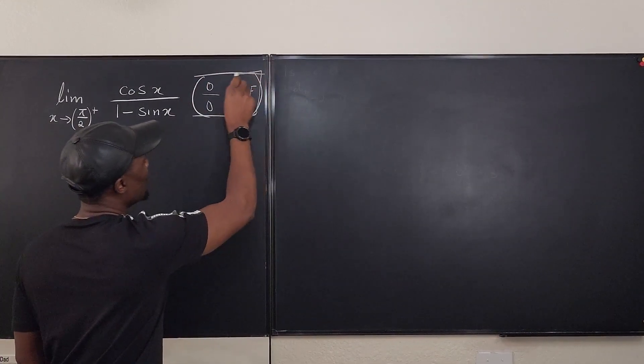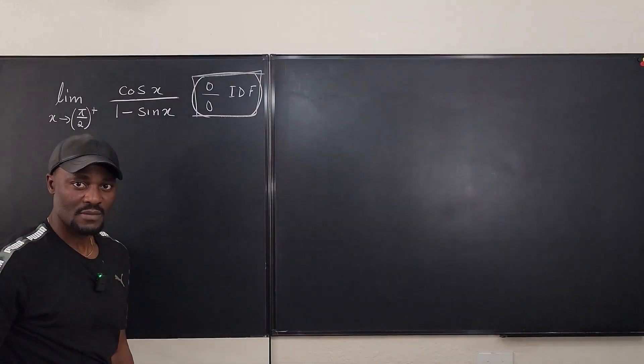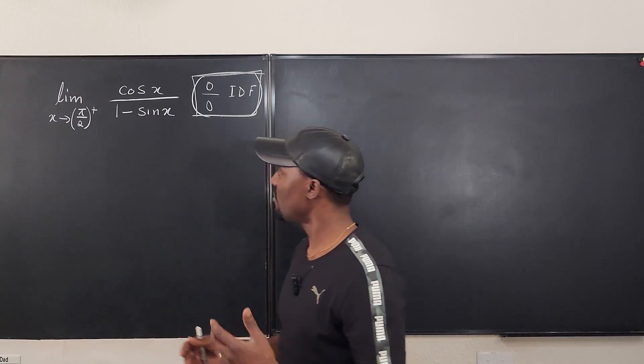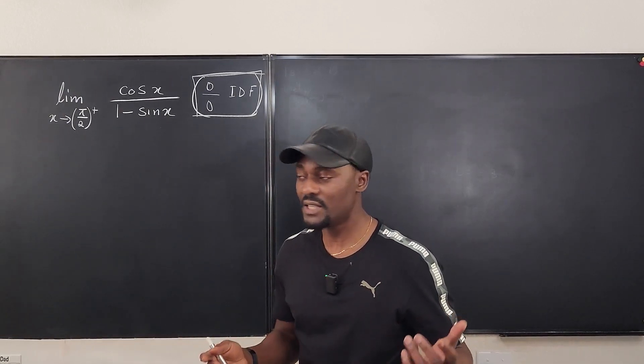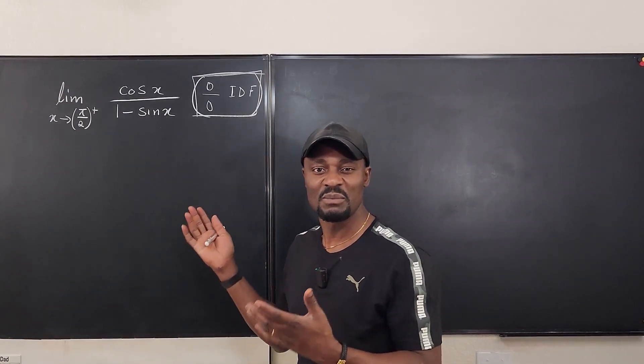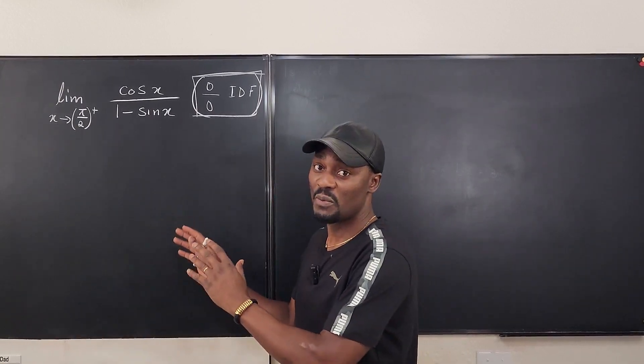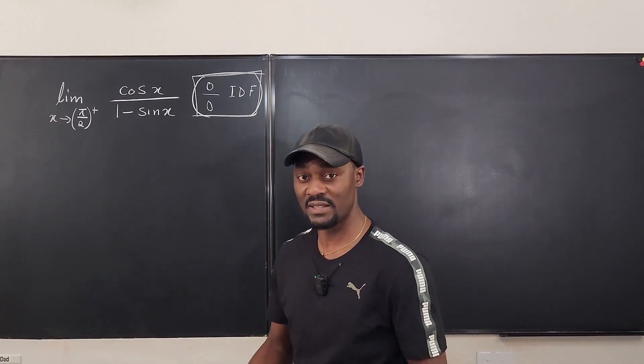We don't want 0 over 0. And every time you get 0 over 0, see if there's some algebraic or trig identities you could use. But because this is simplified and you're allowed to use L'Hopital's rule, let's do it. So I'm just going to use L'Hopital's rule and not fuss around with anything else.